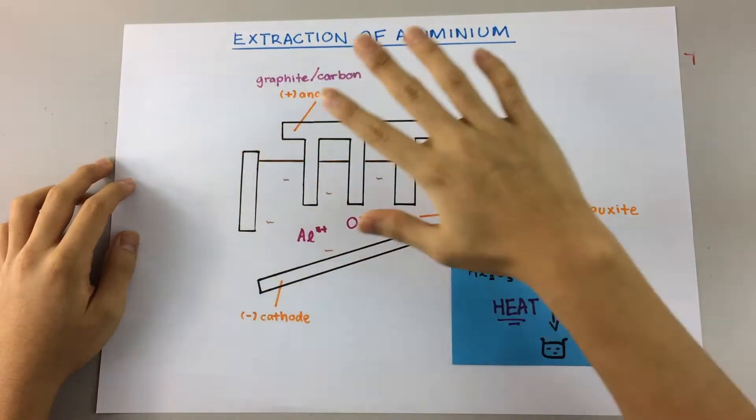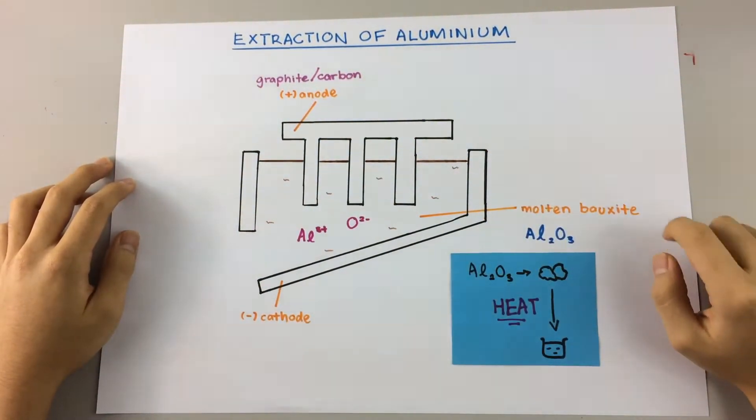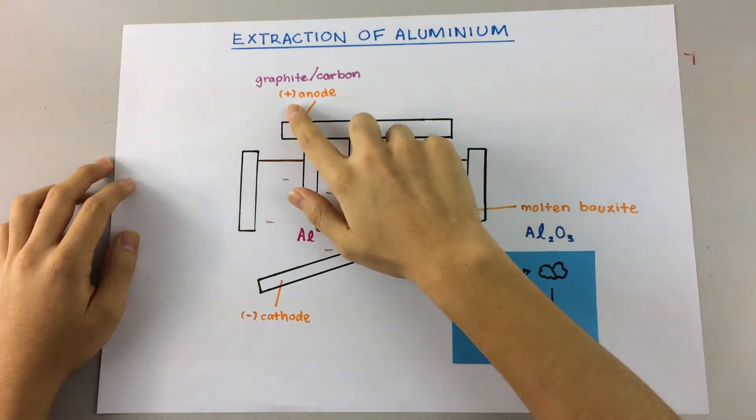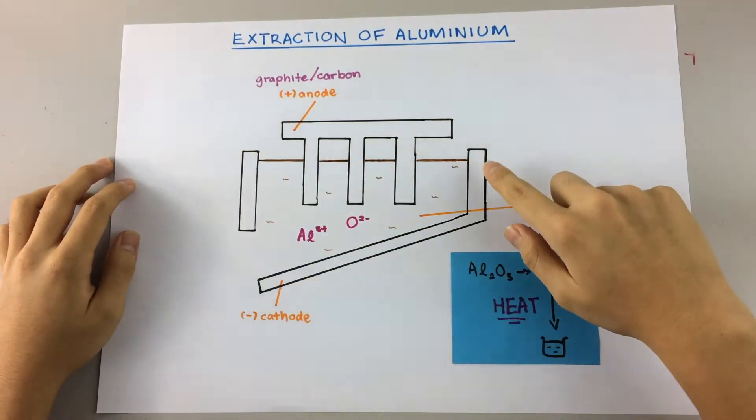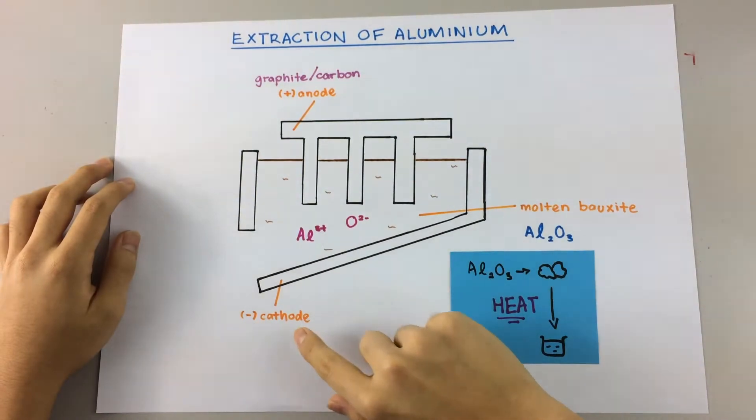Okay, so here is your diagram over here, and the top part right here, that's the positive anode. And surrounding the solution down here, that'll be the negative cathode.